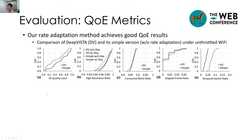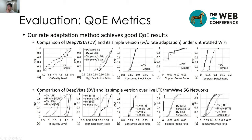The QE metrics used are the viewport stream quality level, the high-resolution ratio, the consumed viewport-stream block ratio, the skipped frame ratio, and the temporal switch ratio. We compare DeepVista and its simplified version — without rate adaptation — under unthrottled Wi-Fi, achieving quite good results. We observe similar results under live LTE and 5G networks. For a detailed explanation of the QE metrics and results, please refer to our paper.